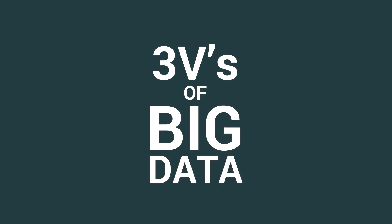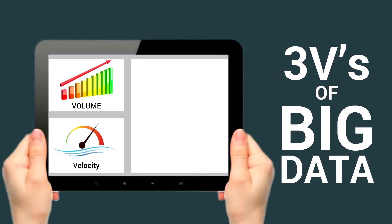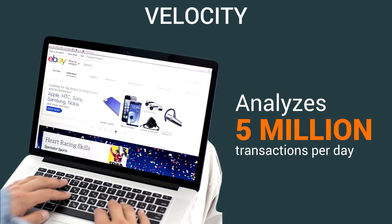Big Data is characterized by the three Vs: Volume, Velocity, and Variety. Volume is the amount of data generated. For example, Twitter generates about 80 megabytes per second. Velocity is the speed at which data is generated and processed. eBay, for example, analyzes 5 million transactions per day in real time to address frauds arising from the usage of PayPal.